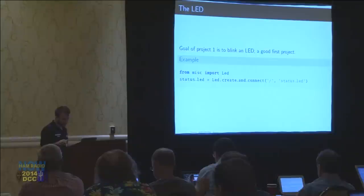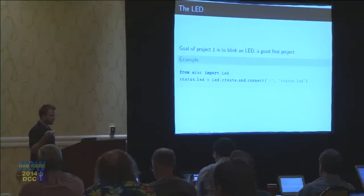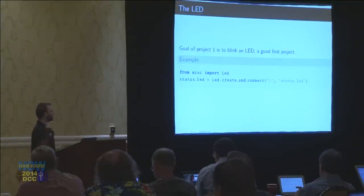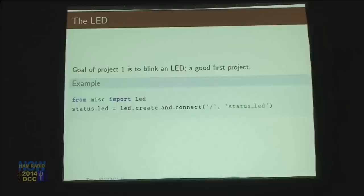I'm going to go a little bit faster. Now we're going to talk about project one in particular. Project number one — the goal of it is to blink a light. It's always a good first thing to do when you make a circuit board or you have an FPGA: get a light blinking and build up from there. Divide and conquer tactics. Start with the simplest thing possible.